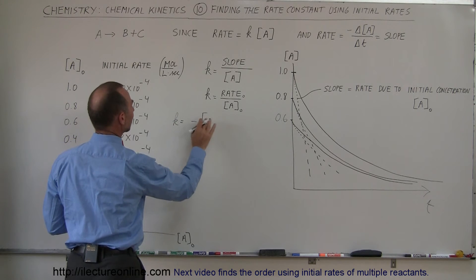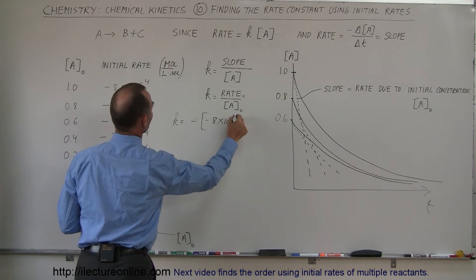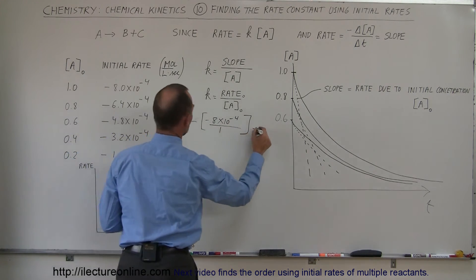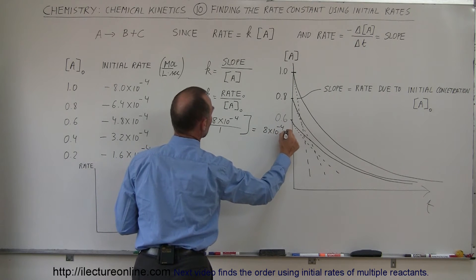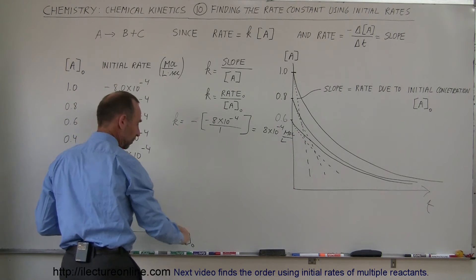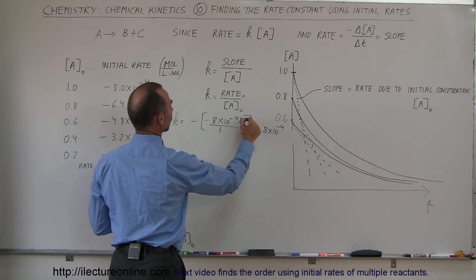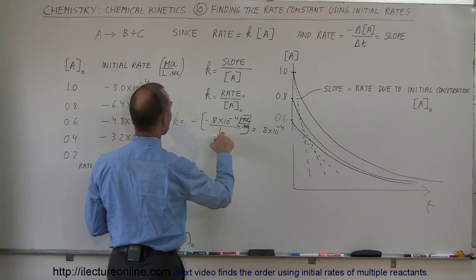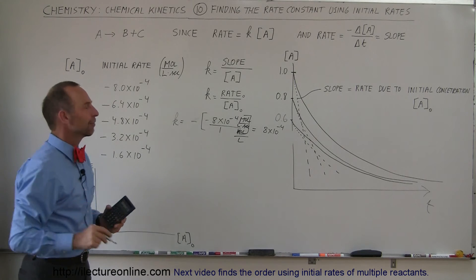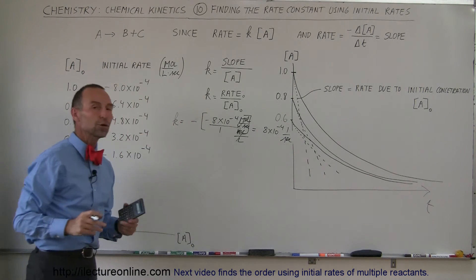So K is going to equal the negative of the rate divided by the concentration. At this point the rate is minus 8×10⁻⁴, and we divide that by the concentration, which is 1. We get a rate constant of 8×10⁻⁴. The units here are moles per liter per seconds divided by moles per liter, so the moles per liter cancel out and the units for K are 1 over seconds — per second.